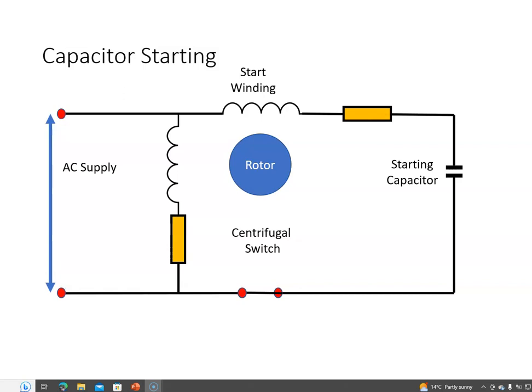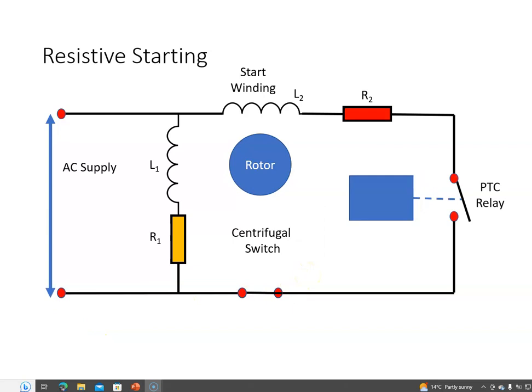Now the question I was asked was how can this start without a starting capacitor, and an application was given where there was a positive temperature coefficient relay. So we might have this motor driving a pump, and that pump could be pumping refrigerant around the system, and when it gets to a particular temperature we want the motor to kick in and start pumping the refrigerant. So when the PTC relay closes we get an equivalent circuit.